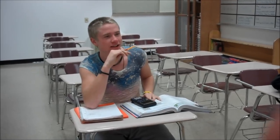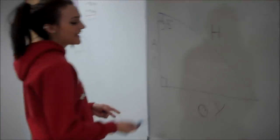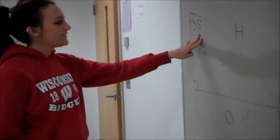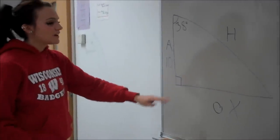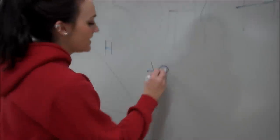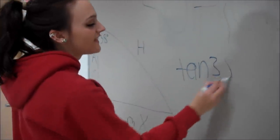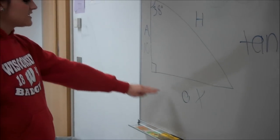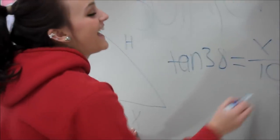So how do you solve for x? Brandon, you have two legs — one is x and one is ten. And because with 38 degrees, this is the opposite and this is the adjacent, we're going to use tangent. You're going to write tangent of 38 degrees equals, and because it's opposite over adjacent, you use x over ten.